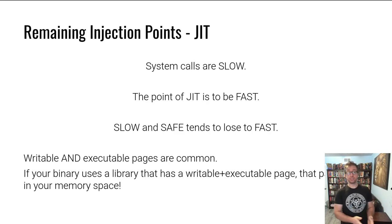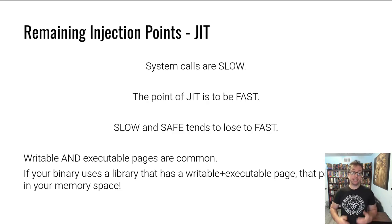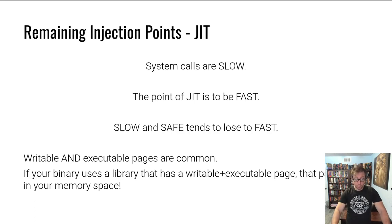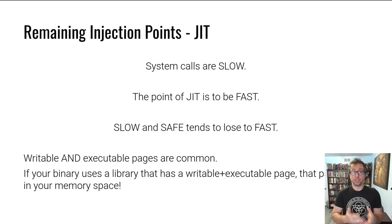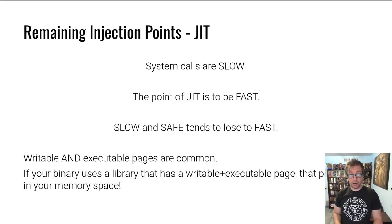This is the safe thing to do, but system calls are slow — so this is also an extremely slow thing to do. An approach like this likely has enormous overhead. The point of just-in-time compilation is to be very fast to speed things up, and slow-and-safe tends to lose out over fast. As a result, writable and executable pages are common. And it gets a little worse: even if your program uses a library that uses writable and executable pages, those pages are in your memory space — so you're vulnerable too.